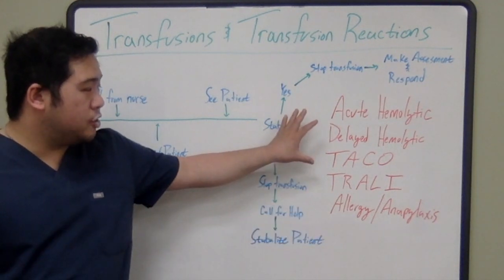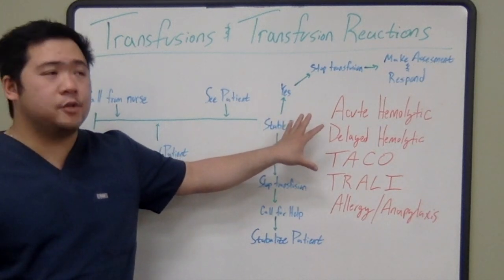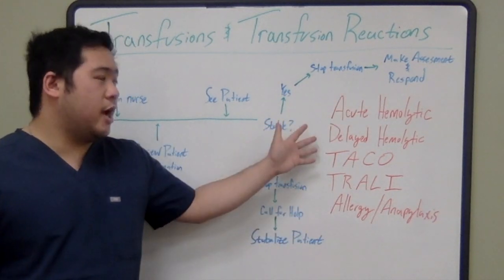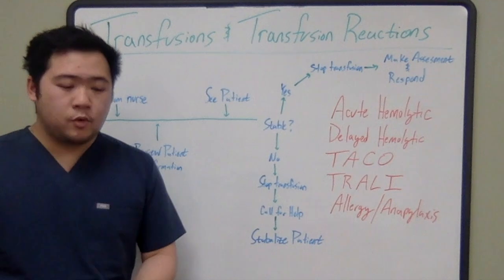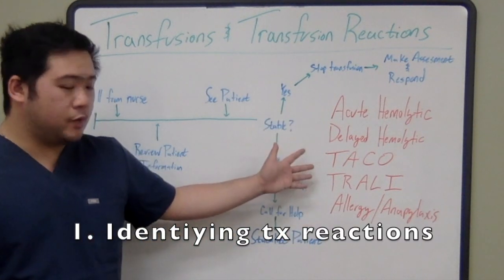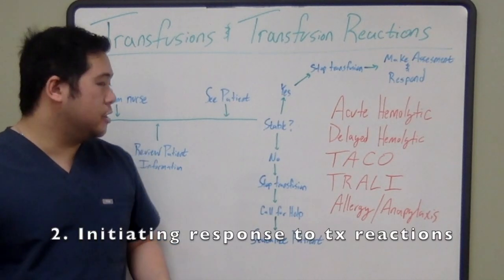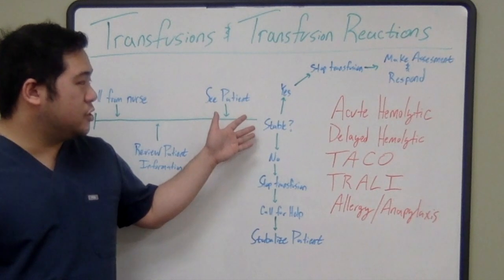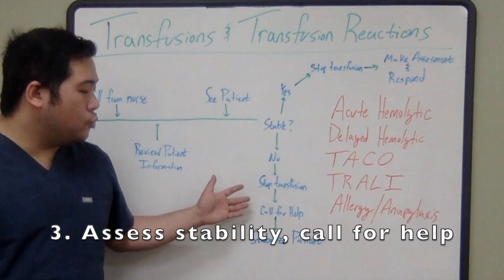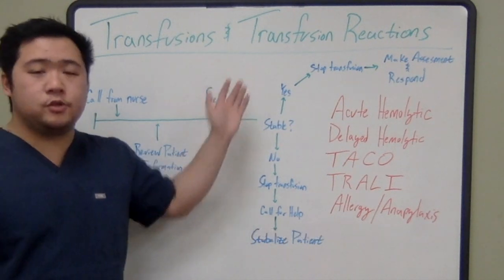For the rest of these reactions, I will stop the transfusion and I'm calling for help in addition to my initial response. To summarize, today we talked about identifying the different types of transfusion reactions, our initial response to these transfusion reactions, and considering whether patients are stable or not stable and how we respond. We also learned about who and when to call for help in patients we're concerned about for receiving transfusion reactions.